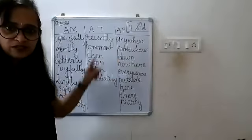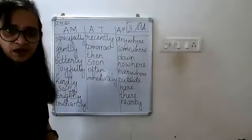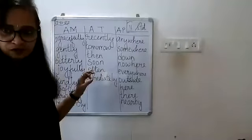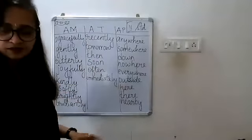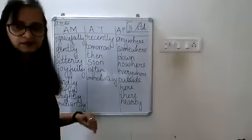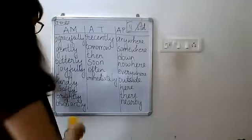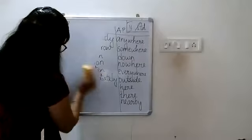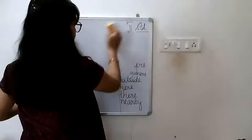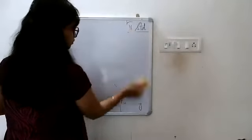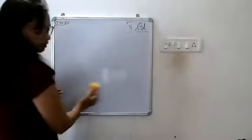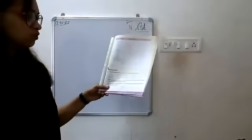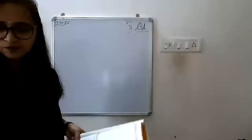Hope all of you have written the words correctly in the correct column. Kirtana, I'll send you the picture so you can copy it down. Now we'll do worksheet four — fill in the blanks with UE, OO, or OU in the words given below.